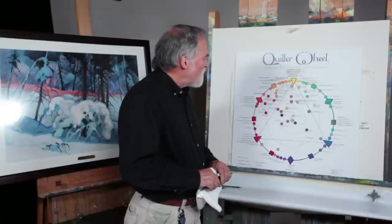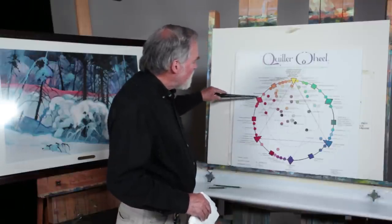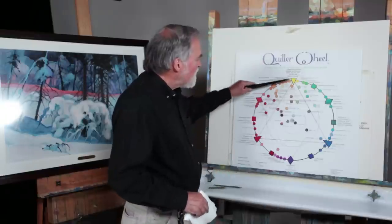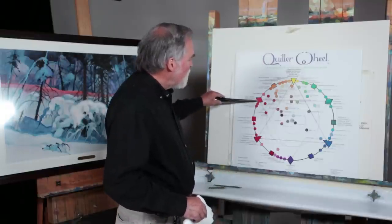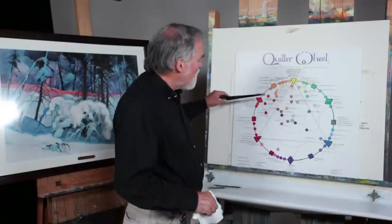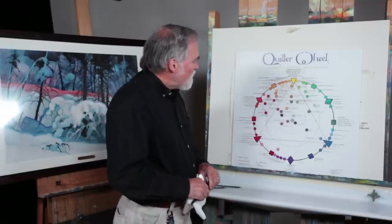With the harmonious analogous color scheme, basically what we're looking at: if you have your 12 major color notes going around the color wheel, if you took any three adjacent colors, for instance yellow, yellow orange, and orange, those three colors would be considered analogous colors because they're all adjacent colors on the color wheel.